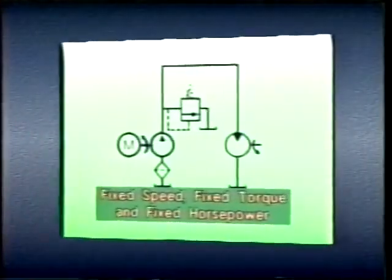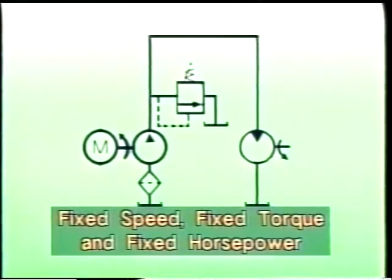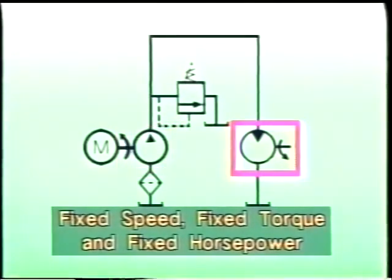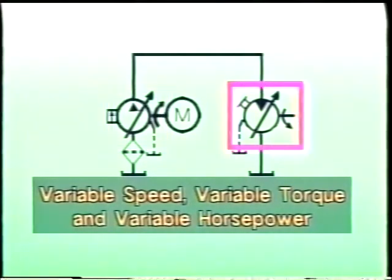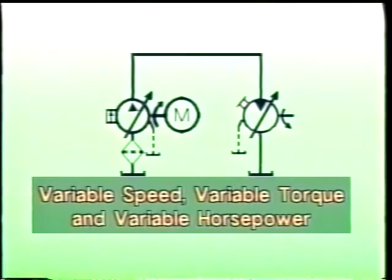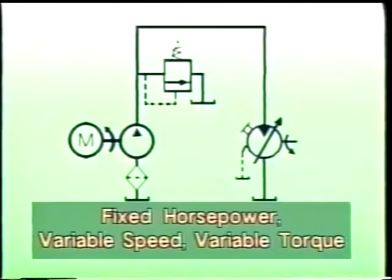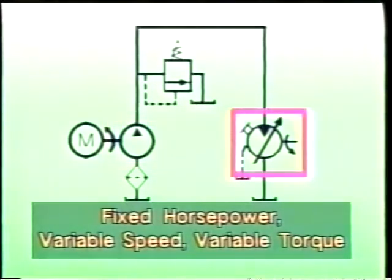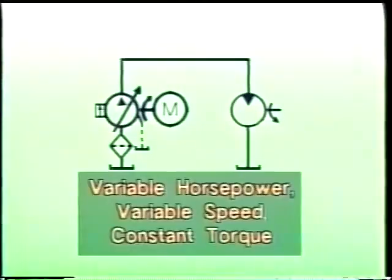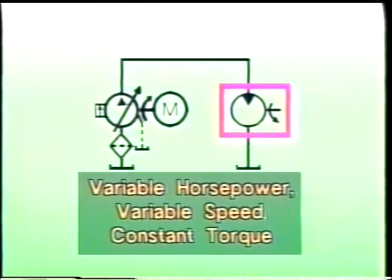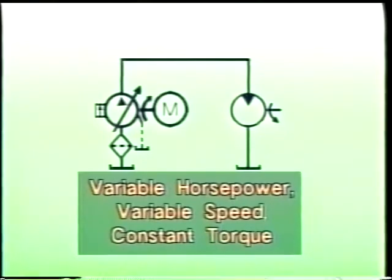The speed, torque, and horsepower of hydrostatic drives and transmissions can be either fixed or variable depending on the type of pump and motor used. If a constant displacement pump and fixed displacement motor are used, the system can deliver only fixed speed, torque, and horsepower. Systems using a variable displacement pump and variable displacement motor provide the most flexibility, producing variable speed, variable torque, and variable horsepower. One common transmission uses a constant displacement pump and a variable displacement motor — horsepower is fixed but speed and torque can be varied. Another uses a variable displacement pump and a fixed displacement motor, producing variable horsepower, variable speed, and constant torque.